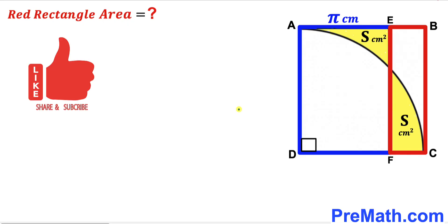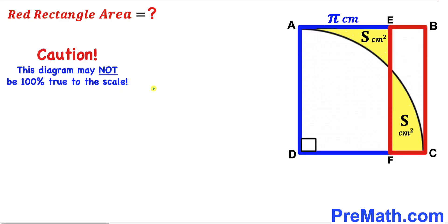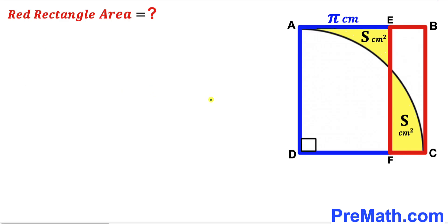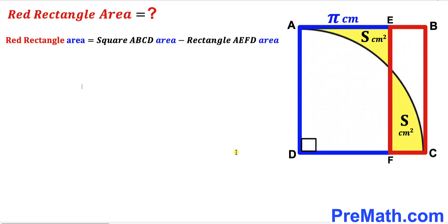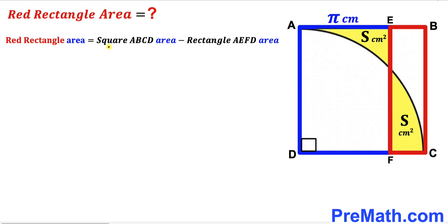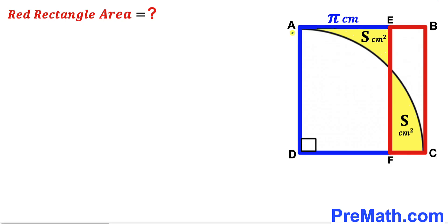Please don't forget to give a thumbs up and subscribe, and keep in mind that this figure may not be 100% true to scale. Our very first step: since we are interested in calculating the area of the red rectangle EBCF, we recall that the red rectangle area equals the square ABCD area minus the area of the blue rectangle AEFD. So our task is to calculate both of these areas.